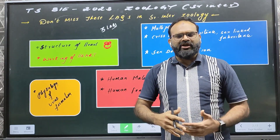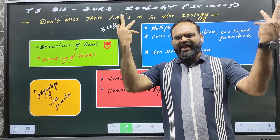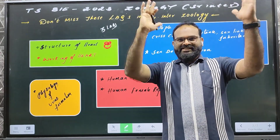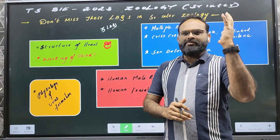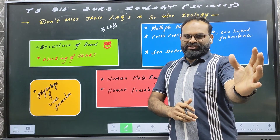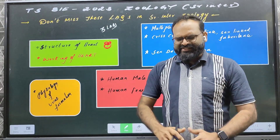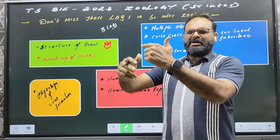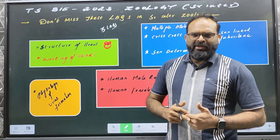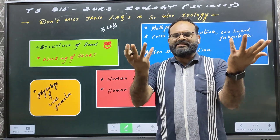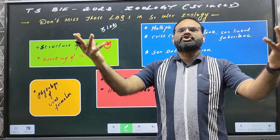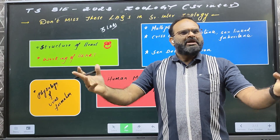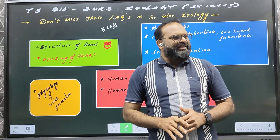Scoring sixty out of sixty marks will be very easy if your approach is correct. Select the most important VSAQ questions, giving first preference to all the VSAQ questions which have been repeated again and again in the exam. The preparation of short answer questions — four marks questions — is very simple, as limited four marks questions are there.